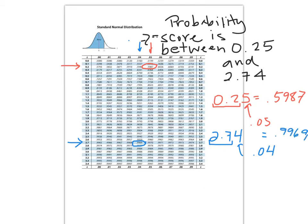Now I want the probability in between these two values. So I have to take the larger probability or area, which is 0.9969, and I need to subtract from it the smaller area, 0.5987. When I work that on my calculator, I get 0.3982, or 39.82%.